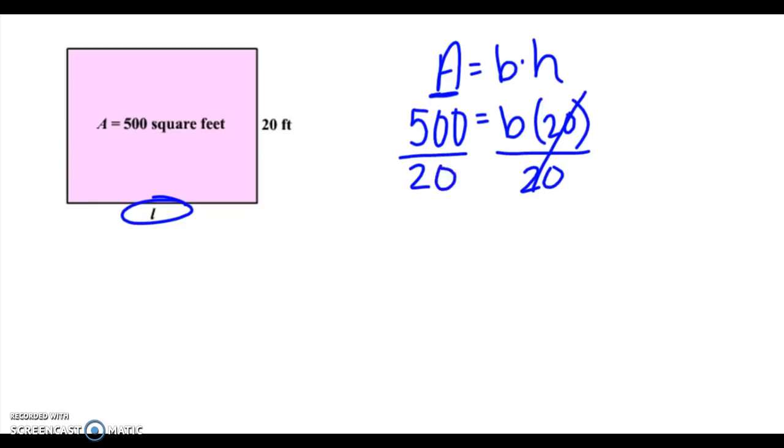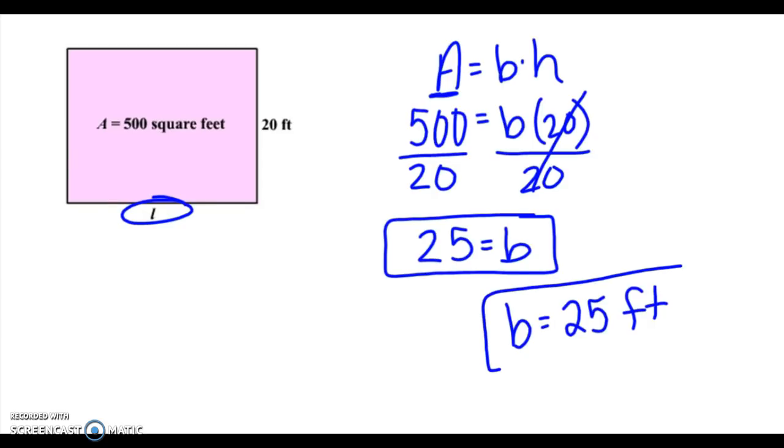So 500 divided by 20, I end up with 25 for my base. Now the units on this, let's talk about it. It's not area that they wanted us to find. It was the base. So my units are just going to be feet, not feet squared. And that's very important to check those units, because we're going to be going back and forth between finding side lengths or dimensions versus finding area or even perimeter every once in a while.